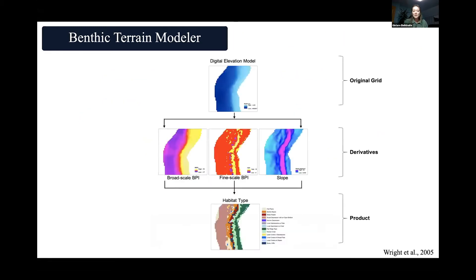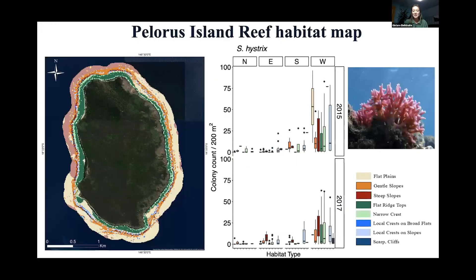The general workflow takes the DEM as an original grid and uses it to calculate derivatives: broad-scale BPI, fine-scale BPI, and slope, to finally create a habitat map. I've done exactly that in RGIS, and my Polaris map shows we've mapped overall two square kilometers of the reef and defined 13 different habitat types based on previous literature, adjusting for the study site. We then overlapped the habitat raster with coral data and extracted those values. For coral data there were eight different habitats represented.